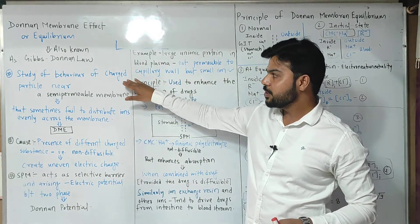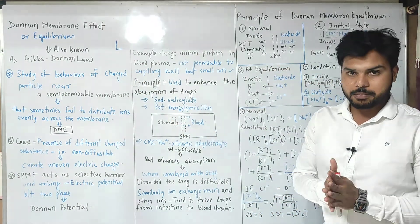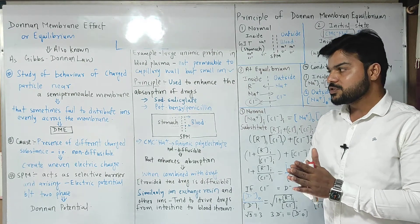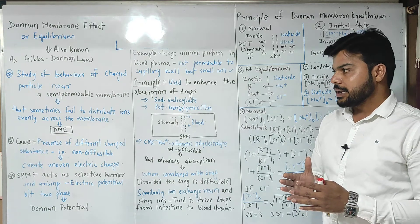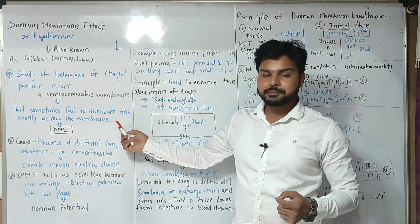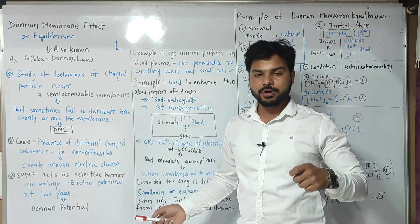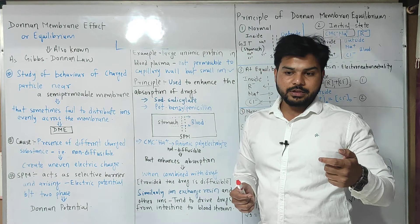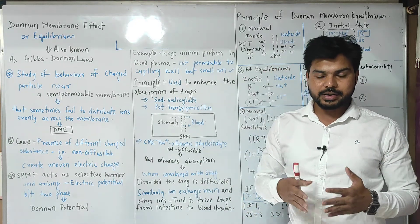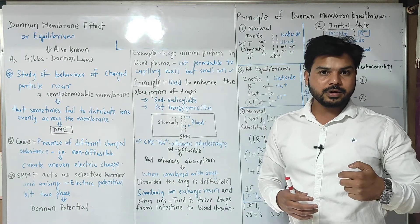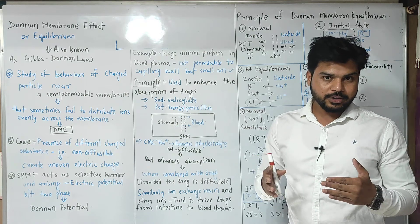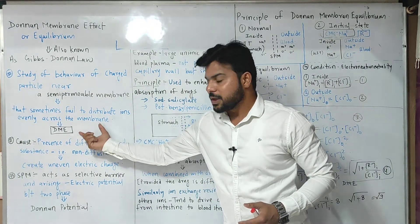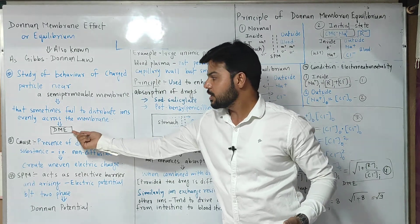First, we will talk about the study behavior of charged particles near a semi-permeable membrane. It talks about the study of charged particles near the semi-permeable membrane that sometimes fail to distribute ions evenly across the membrane. Ions — whether drug or other macromolecule ions — sometimes distribute unevenly. Because of the presence of some non-diffusible ions, this process of distribution becomes uneven. This behavioral study is called the Donnan Membrane Effect.